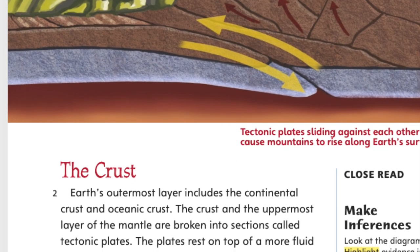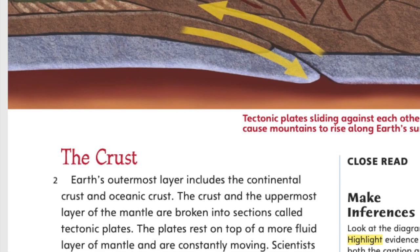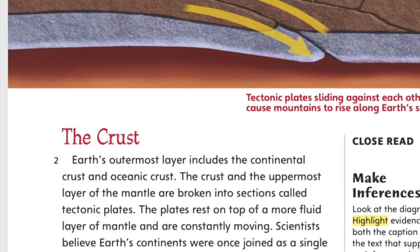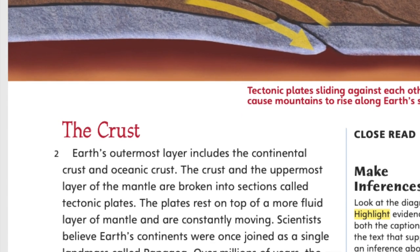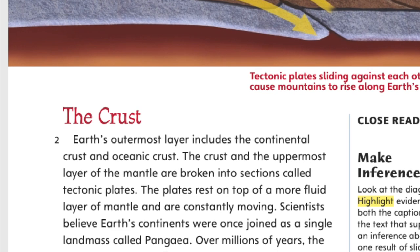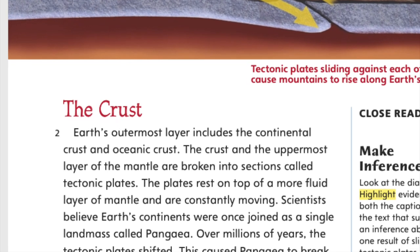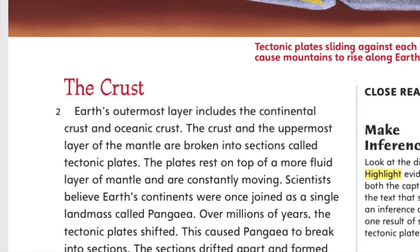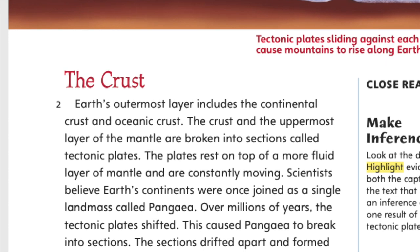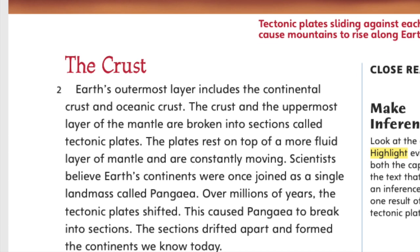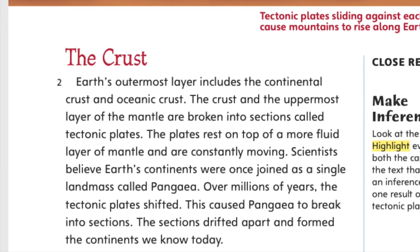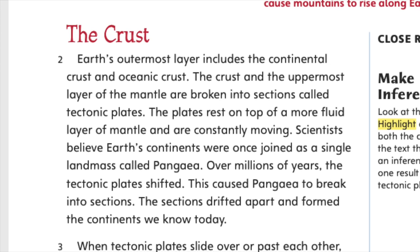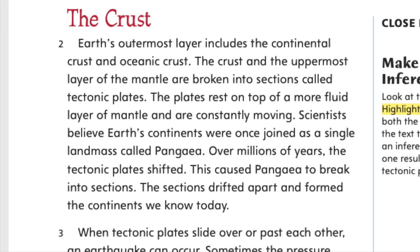Scientists believe Earth's continents were once joined as a single landmass called Pangea. Over millions of years, the tectonic plates shifted. This caused Pangea to break into sections. The sections drifted apart and formed the continents we know today.